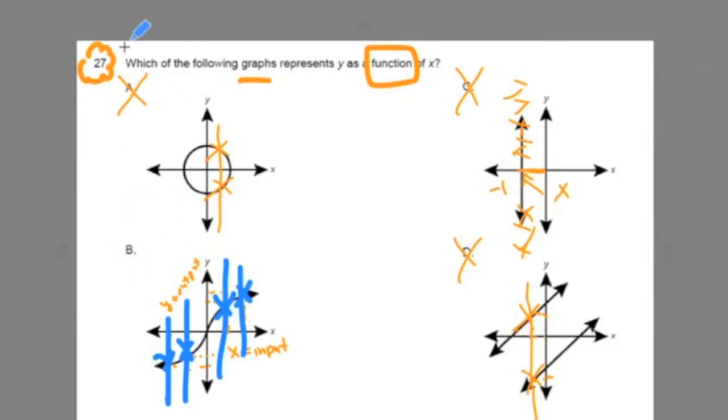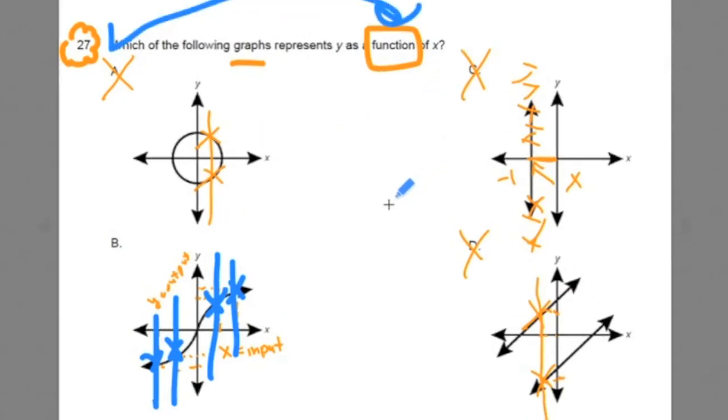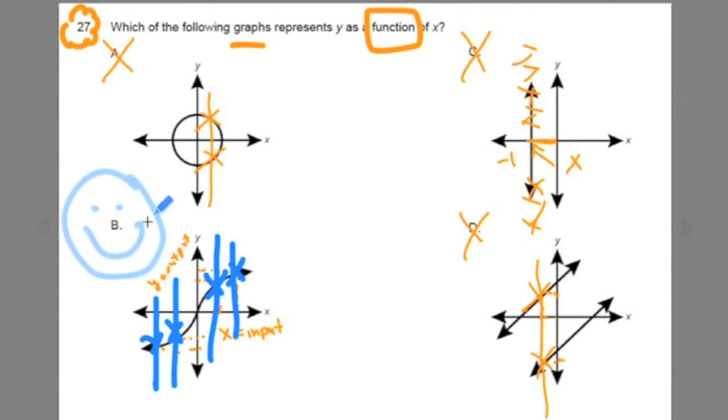So team, the strategy: whenever you're given a question on which one of the graphs is a function, draw the vertical line. The ones where the line intersects more than once, they're not functions. Cross them out. The graph where the line only intersects once is your function.